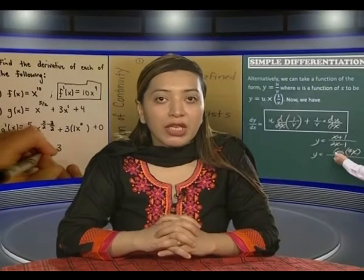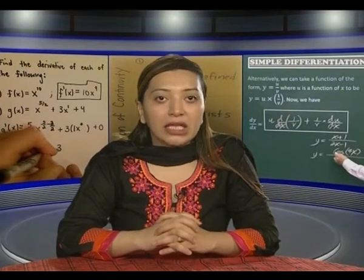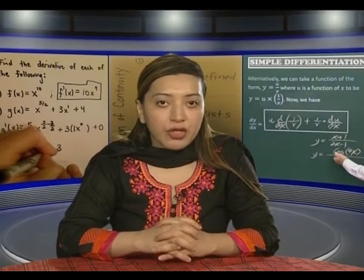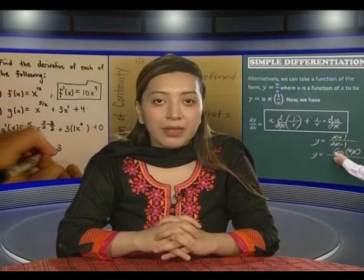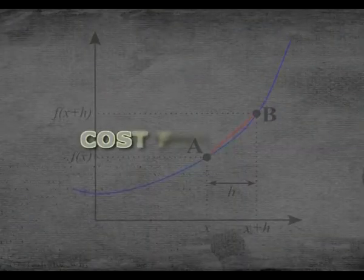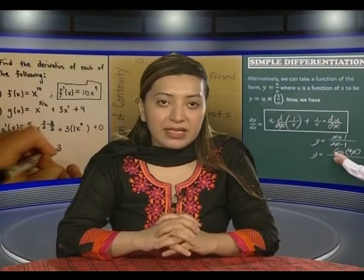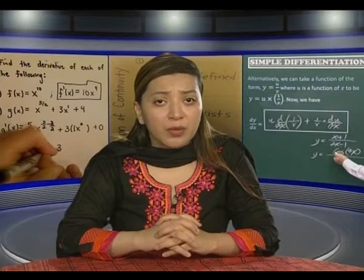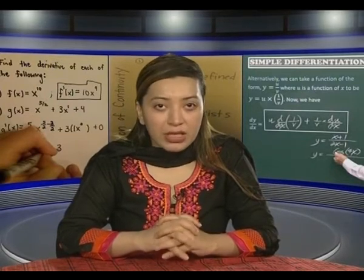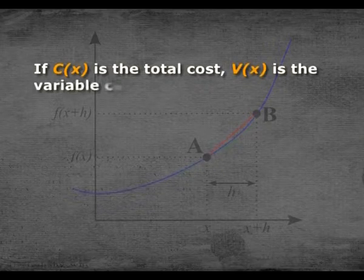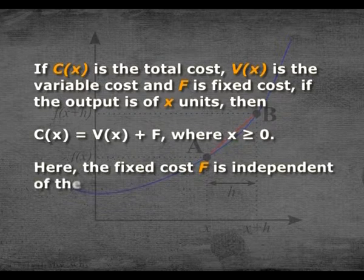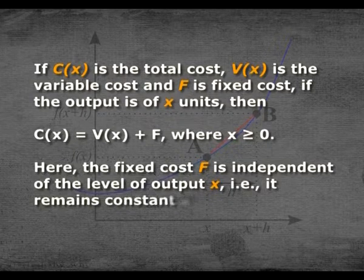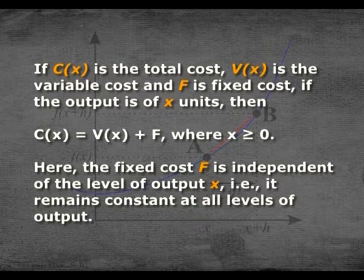The marginal concept is the instantaneous rate of change of one quantity with respect to another, while the average is one quantity over a specified range of values of another. In other words, the variation of one quantity with respect to another may be described by either marginal or average cost. Total cost is the total money expenses incurred for buying input requirements for producing a commodity, equal to fixed cost plus variable cost. The fixed cost F is independent of the level of output x — it remains constant at all levels of output.